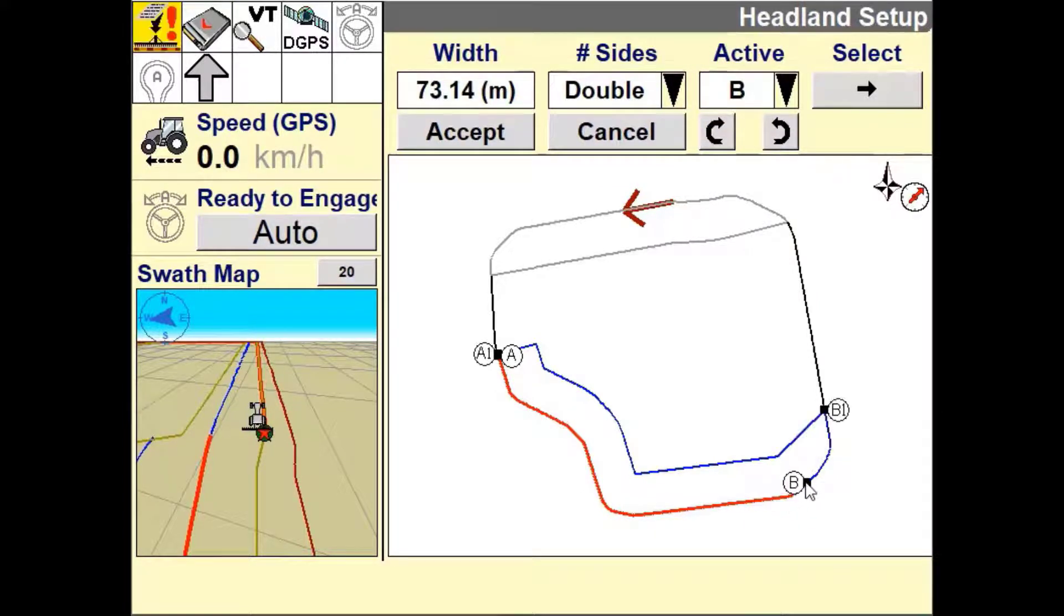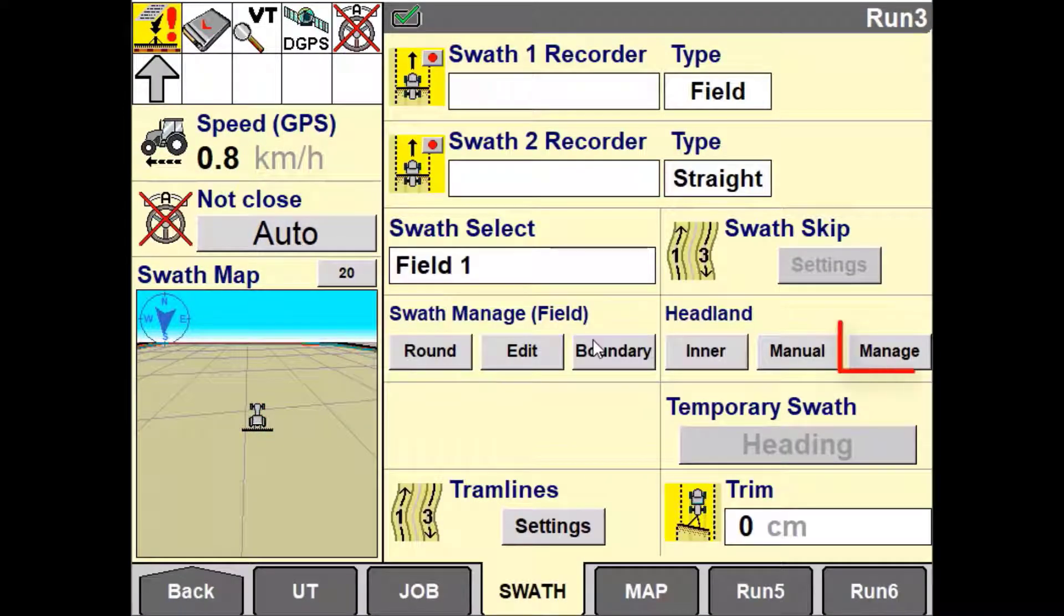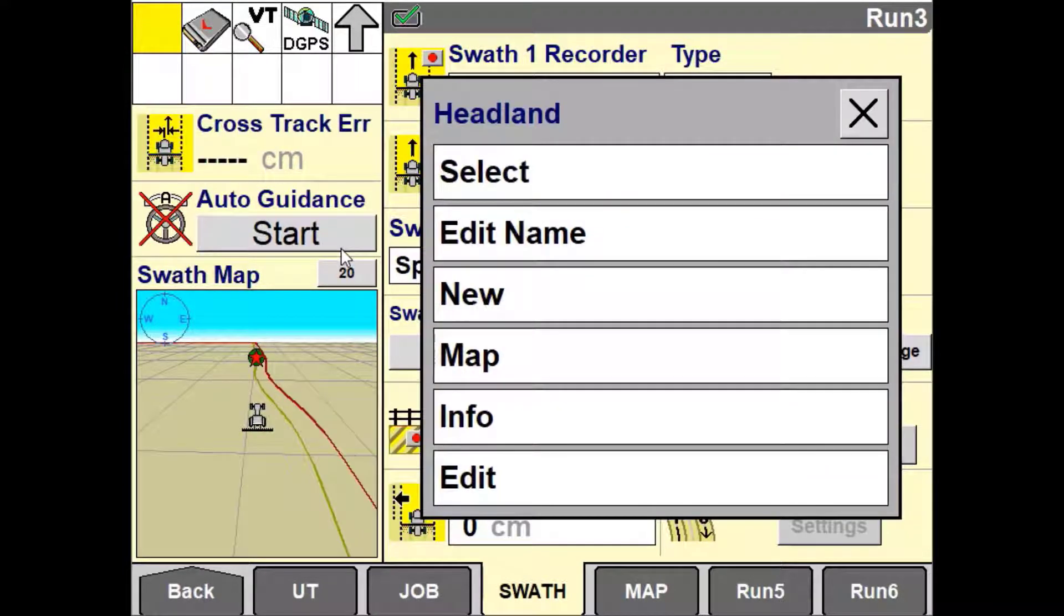The second way is to use the left and right arrows to move this point either clockwise or anti-clockwise along the boundary. Once the headland is created you can use the manage button to edit the name, see information regarding the active headland, edit the current headland pattern or create a new headland altogether.